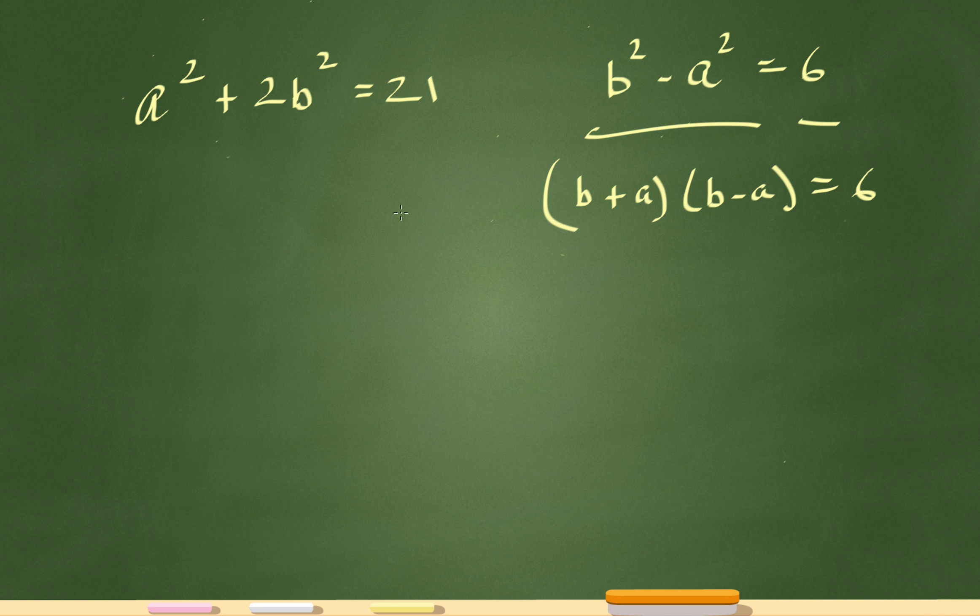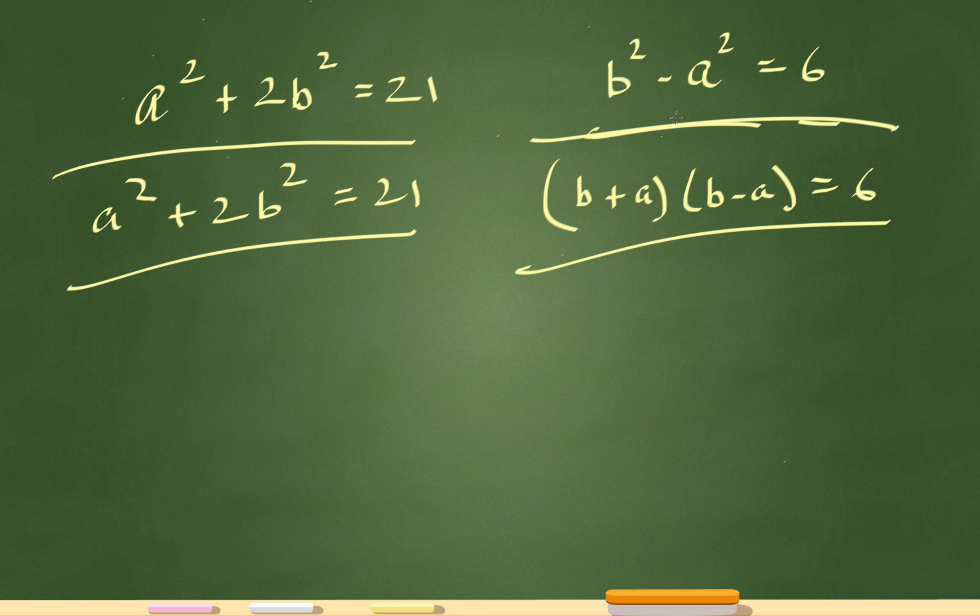I saw a squared plus 2b squared equals 21 over here, and I just couldn't figure out a way to connect the dots from this and this. Even though I know that b squared minus a squared equals that, I just didn't figure out a way to connect the dots, and what clicked with me was this.